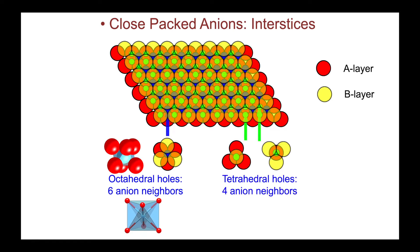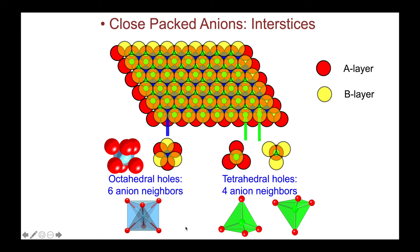Also within the layer are a set of tetrahedral holes, shown in green, such that if a cation occupies this particular position, it would have four anion neighbors. Shown here is a polyhedral view of those environments, such that if a cation — shown in the middle of this tetrahedron — should occupy the hole, it would have four anion neighbors.